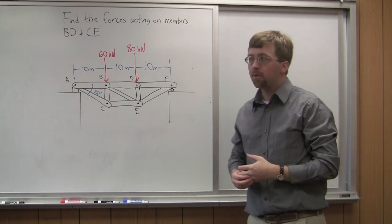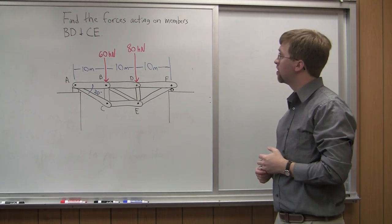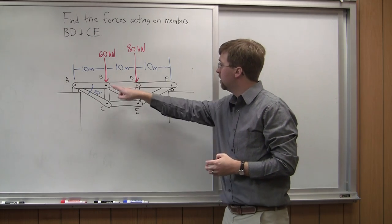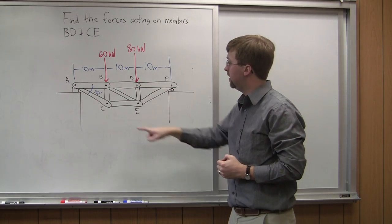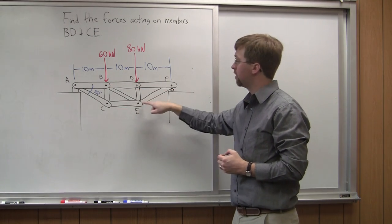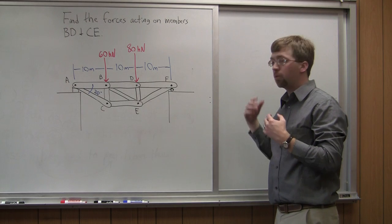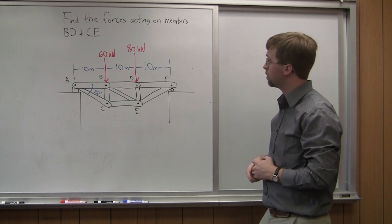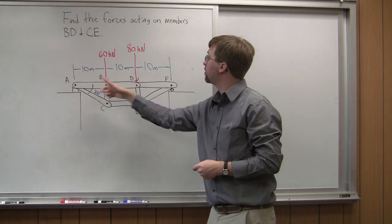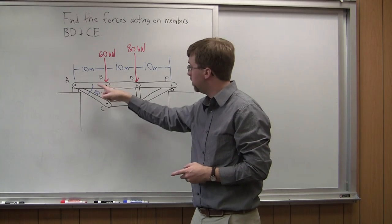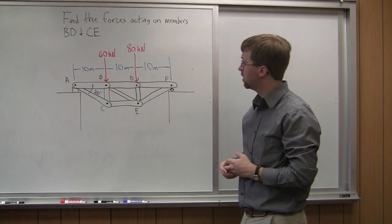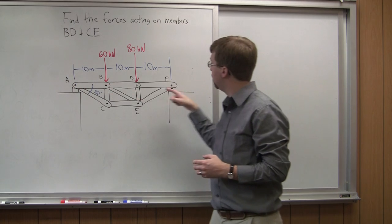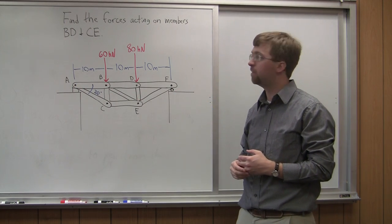Hello, for this worked example we are asked to find the forces acting in members BD, which is the top member, and CE, which is the bottom member. What we have here is a truss — a bridge spanning about 30 meters. We've got a 20-degree angle, a pin joint over at A, and a roller joint over at F.